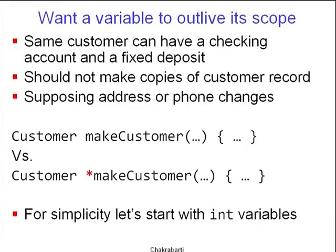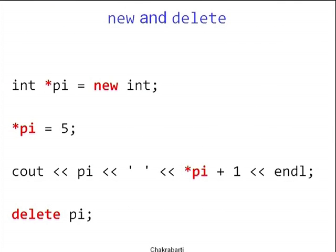This pointer becomes a handle by which you hold the customer. The handle can be copied, but once you access the handle, you get to exactly the same memory spot. For simplicity, let's forget about customers and start with int variables. How do you allocate an int that does not come from the stack? You do that by calling the new keyword: new int makes a new integer. It does not return an integer — it returns a pointer to an integer.